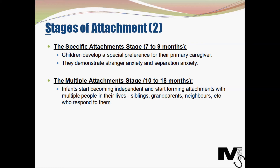The next stage is the multiple attachments stage, occurring between 10 to 18 months. At this stage infants start becoming independent and start forming attachments with multiple people in their lives — siblings, grandparents, neighbors and others who respond sensitively to them. All of the people who respond to the child become caregivers to a certain level, and the attempt at this stage is to look at multiple people and form multiple attachments.